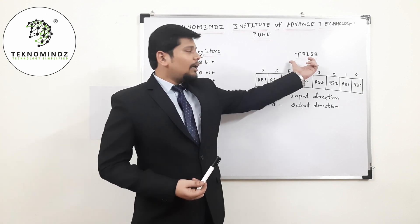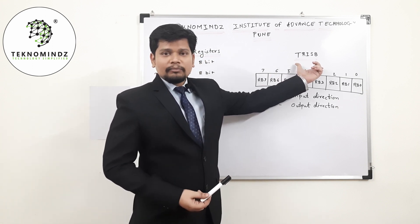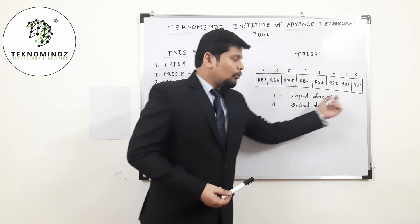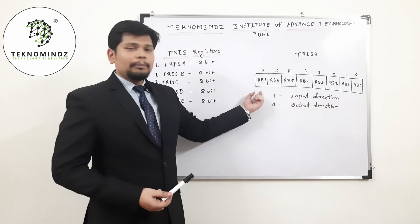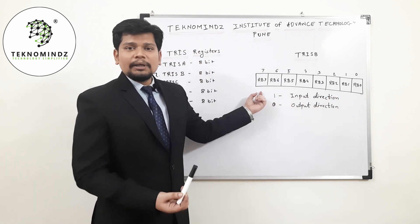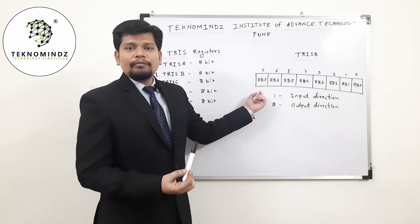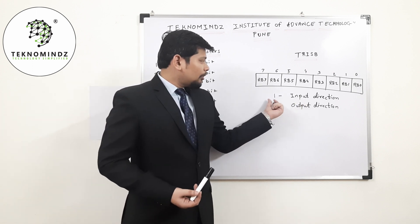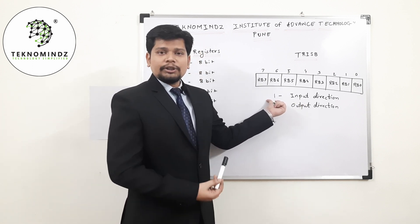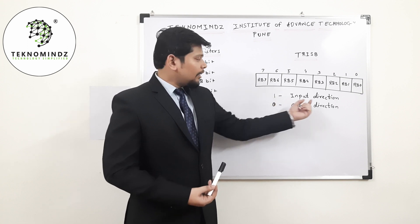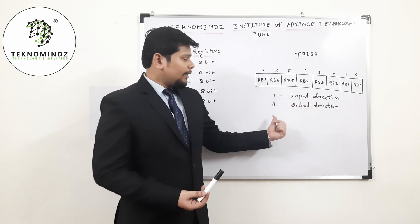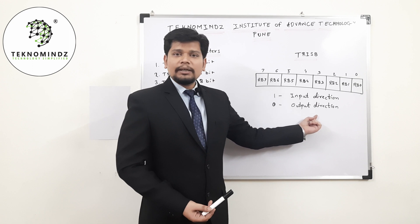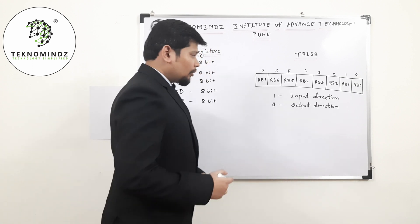For example, I have taken the TRISB register, which is described from RB0 to RB7. For each pin, I can give the direction accordingly. If I give logic 1, that will be considered as input, and if I give logic 0, that will be considered as output.